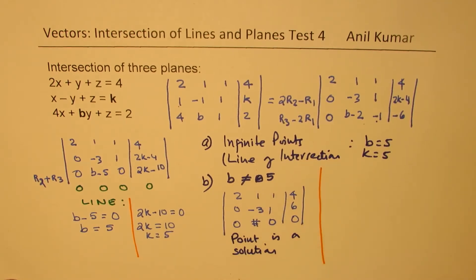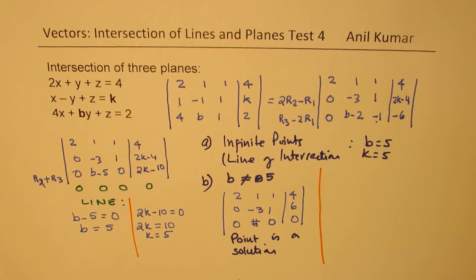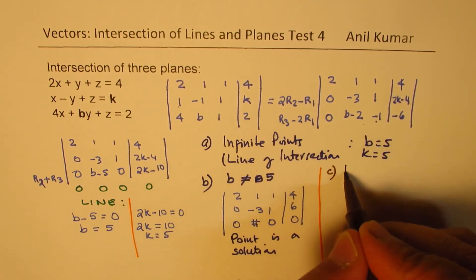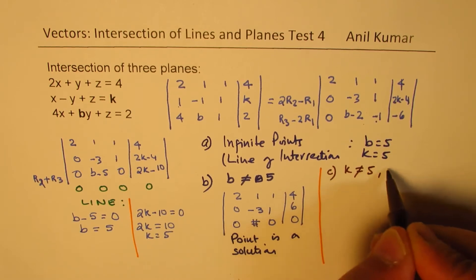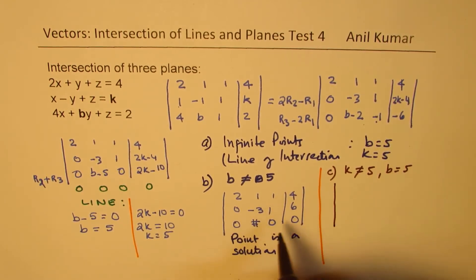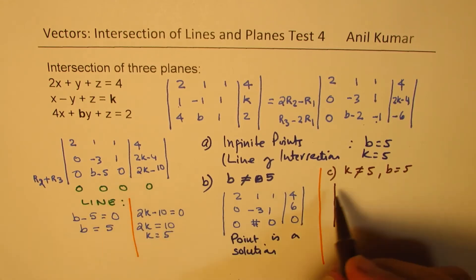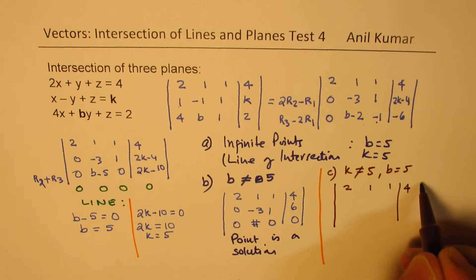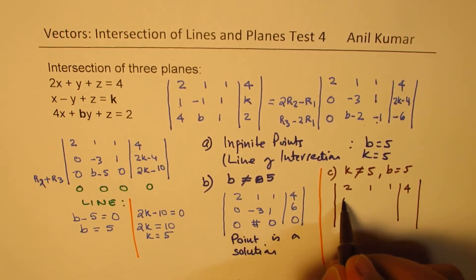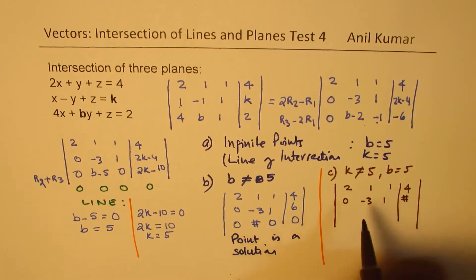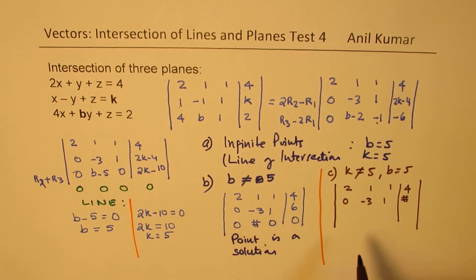Let's consider part c. And part c is that k is not equal to 5, but b we are maintaining as 5. So in that case, what happens? So if k is not 5, then we get 2, 1, 1, 4. And here we get 0 minus 3, 1, some number. And like we got some number last time.